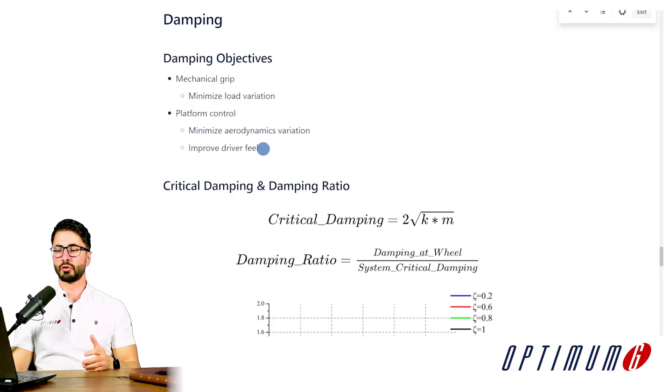And the second thing is also to improve driver feel. Sometimes he needs to feel a stiffer car that transfer loads faster, that does not move as much, that does not oscillate as much. So these are all the different parameters that we have to consider when defining damping. So we're going to have to find a compromise between them depending on the type of car that we're working with.